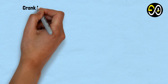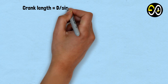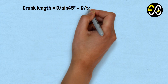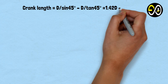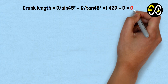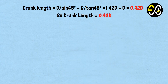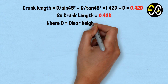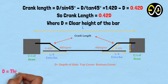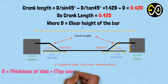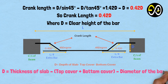Crank length = d/sin(45°) − d/tan(45°) = 1.42d − d = 0.42d. So crank length equals 0.42 times d, where d equals the clear height of the bar. d = thickness of slab − (top cover + bottom cover) − diameter of the bar.